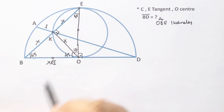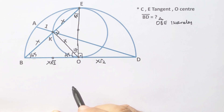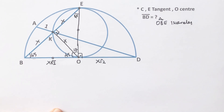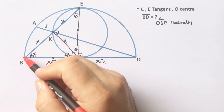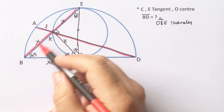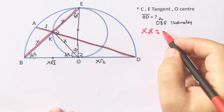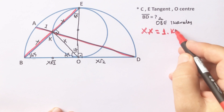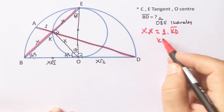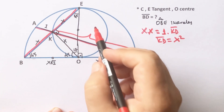Because of the isosceles right triangle, this length is also the radius, so this length is x√2 as well. To find x, we can use the power of point K. So x times x equals 1 times KD, which gives us KD = x². So here is x².